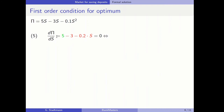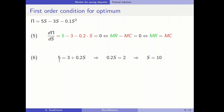The profit function becomes: 5S minus 3S minus 0.1S². Differentiating with respect to S gives: 5 minus 3 minus 0.2S, set equal to zero. The green part represents marginal revenues and the red part represents marginal cost, giving us the profit maximization condition: marginal revenues equal marginal cost. Marginal revenues equal 5 and marginal costs equal 3 plus 0.2S.